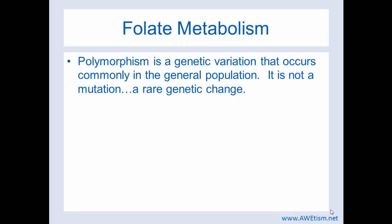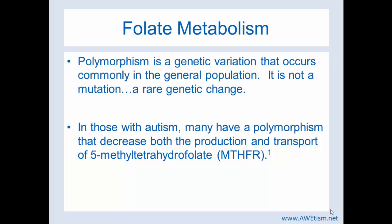Now, folate metabolism. First, we need to talk about polymorphism. Polymorphism is a genetic variation that occurs commonly in the general population — it's not a mutation. A mutation is a rare genetic change, whereas a polymorphism is a common genetic variation. In those with autism, many have a polymorphism that decreases both the production and transport of 5-methyltetrahydrofolate. It doesn't mean everyone with autism has this polymorphism, and reversely, those who have this polymorphism don't necessarily have autism.